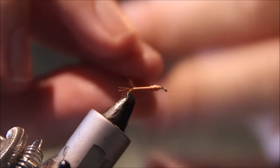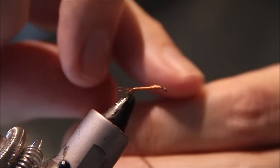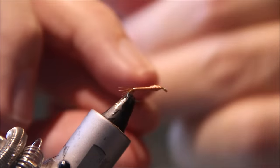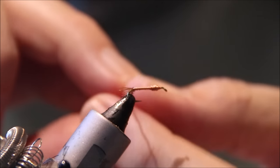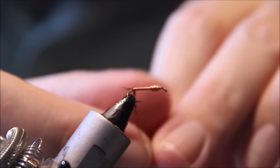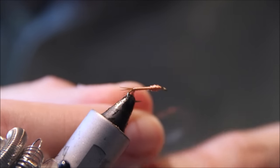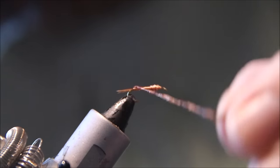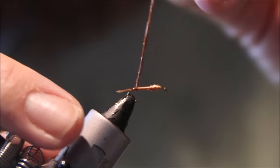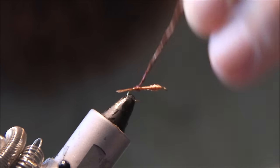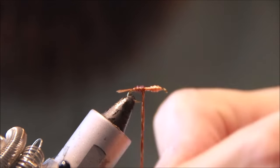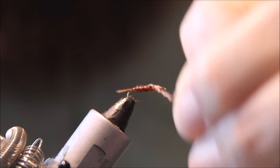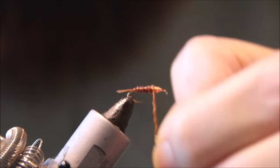I'm just going to twist the pheasant tail and the wire together, as per Frank Sawyer's instruction. Then just carefully take this forward and build up a nice body. Just keep going all the way to the front.